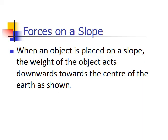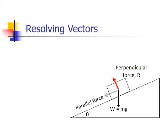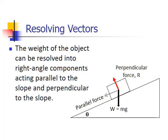When an object is placed on a slope, the weight of the object acts downwards towards the center of the earth as shown in the diagram. The weight of the object can be resolved into two right angle components, a component acting parallel to the slope and a component acting perpendicular to the slope.